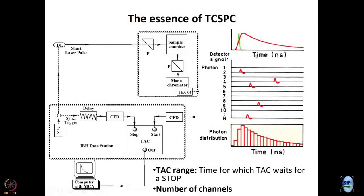There are certain terms we will need to know. The first one is TAC range. TAC range is essentially the time for which a TAC waits to get a stop signal before resetting and starting all over again. You can think of TAC range as the maximum time measured in your experiment — it is the full scale on the X-axis, the time axis.